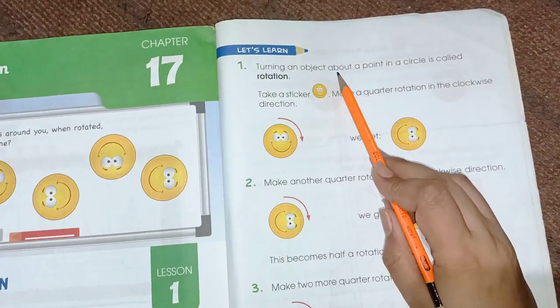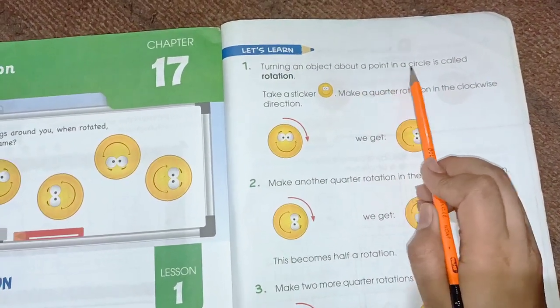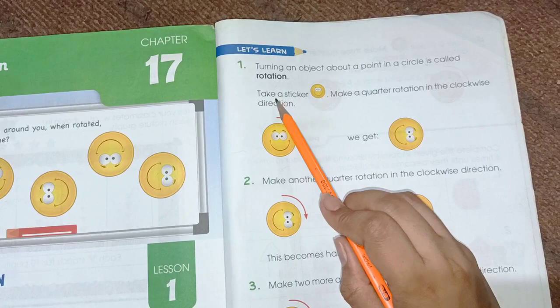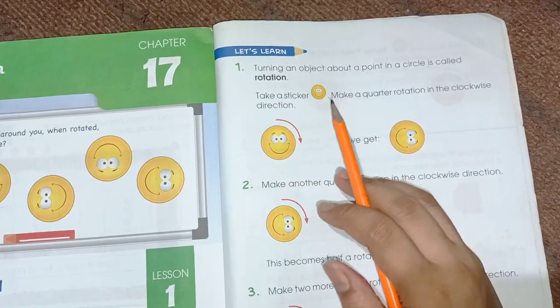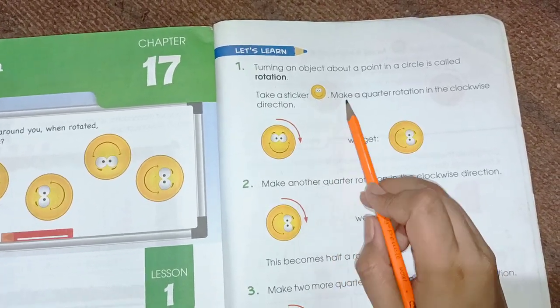Turning an object about a point in a circular is called rotation. Take a sticker. You can take any kind of thing you have to rotate. For an example,